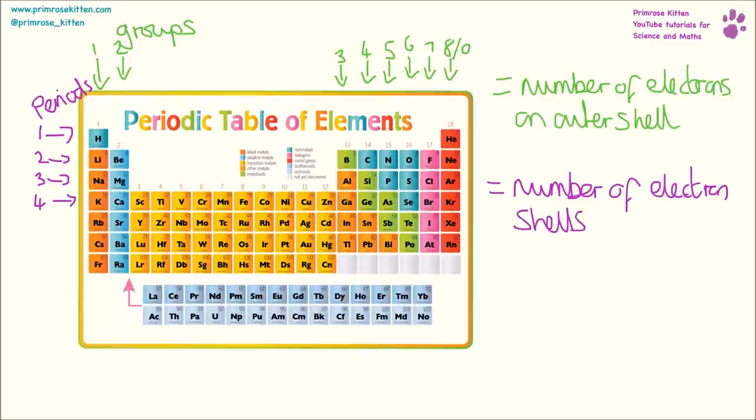We can use these two pieces of information to work out the electronic configuration of an atom. We can also use it to remind us how many electrons go in each shell. In the first period, there are two elements. And in the first shell, we can only fit two electrons. In the second period, there are eight elements. And in the second shell, we can only fit eight electrons. In the third period, there are eight elements. And in the third shell, we can only fit eight electrons. The fourth shell, you only need to know up to calcium.